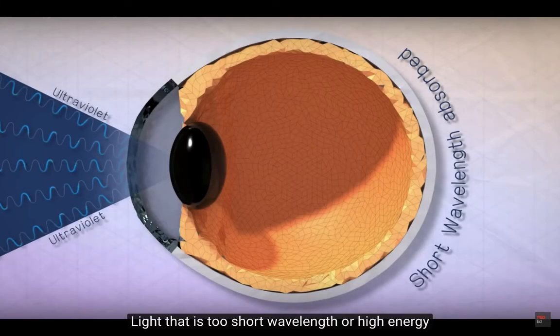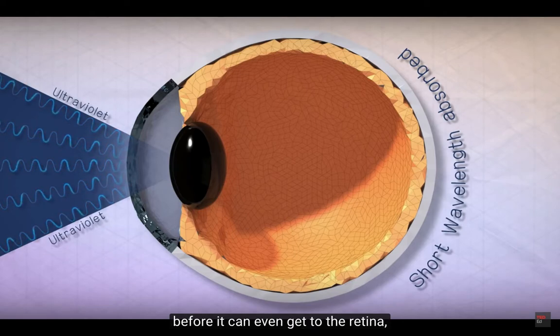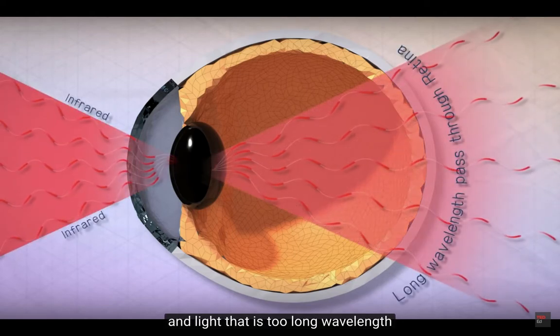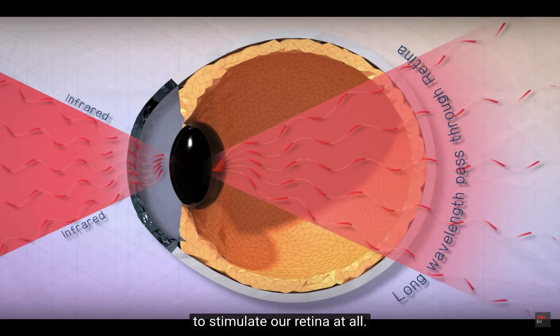If light shines on us with an energy our retina can't measure, we won't be able to see it. Light that is too short wavelength or high energy gets absorbed by the eye surface before it can even reach the retina, and light that is too long wavelength doesn't have enough energy to stimulate our retina at all.